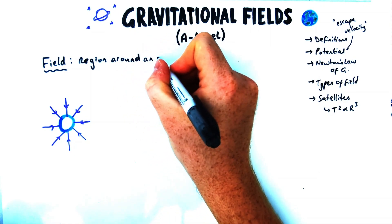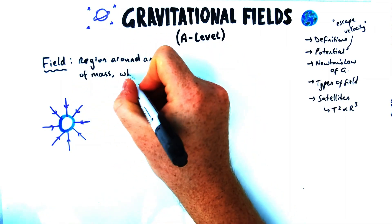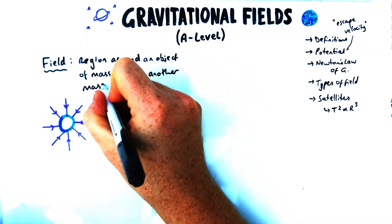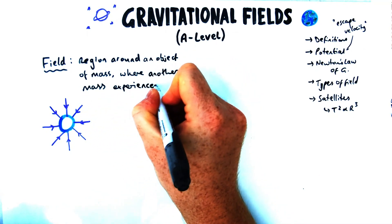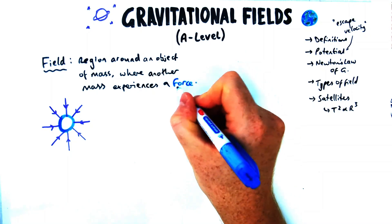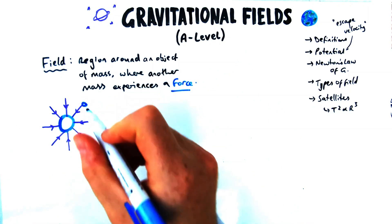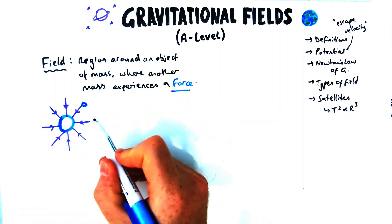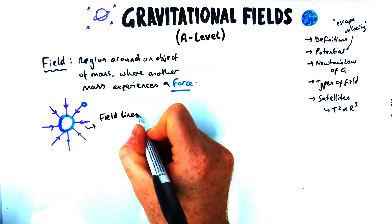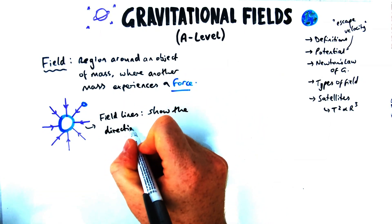The first thing we're going to define is what is a field — in particular, a gravitational field. This definition applies to electric fields as well; you just have to tweak a couple of words. A gravitational field is a region around an object of mass where another mass experiences a force. Without mass in both objects, there's not going to be a force between them.